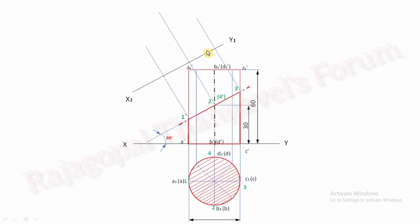After extending a perpendicular projector, you have to convert the cutting points of the section plane onto these perpendicular projectors. For point 1 dash, keep point A dash as center and the distance as radius to fix point 1,1. For point 2, measure the distance from XY and reproduce the same distance on the 2 dash projector. Likewise, measure the distance from XY for point 3 and place it on the 3 dash projector to complete 3,1. Finally for point 4, measure the distance from XY and reproduce the same on the 4 dash projector.